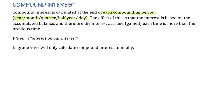With compound interest, we earn interest on the total amount — all of the money in our bank account. Therefore, each time we calculate and add interest, that interest is going to be more than the previous time. The key phrase to remember is: with compound interest, we can earn interest on our interest. Remember that with simple interest we had the same amount of interest every year.